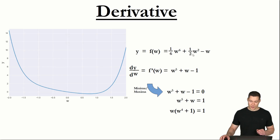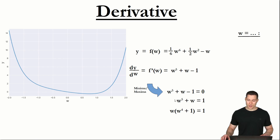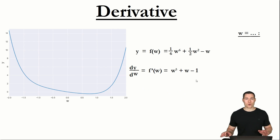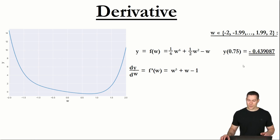Instead of using an analytical approach, we're going to use a numerical approach. So instead of manipulating the equations themselves, we're going to use different values for our w and see what our function outputs. One of the most basic numerical approaches is a brute force approach, where we simply determine y for a huge number of different w's, then check which w results in the lowest y. In this way, we can find an approximation for the minimum of this function.